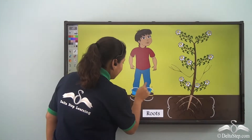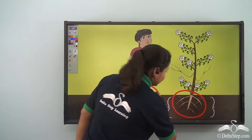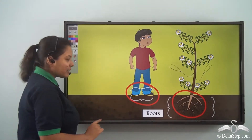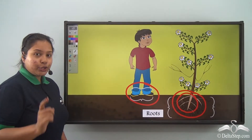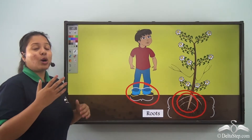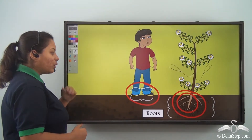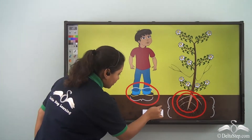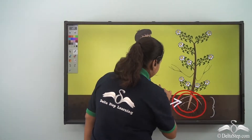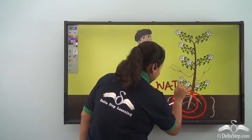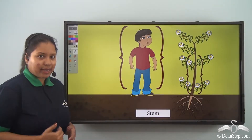Just like you have feet, my feet are here underneath. Just like we have feet, the plant also has feet which is underneath. Do you know what it is called? They are called roots. They suck water and help the plant to grow. So, this part of the plant is known as roots — they stay underneath, suck in water, and help the plant to grow.